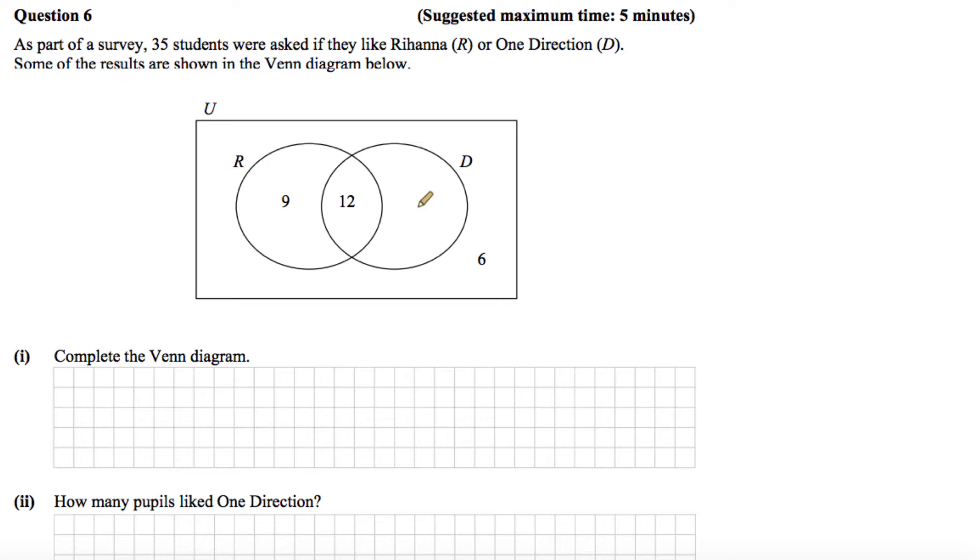So we're missing this number here and it says to complete the Venn diagram. Well we know that there's 35 students all together so our universal set is 35. And we know that all the numbers in here should add up to 35.